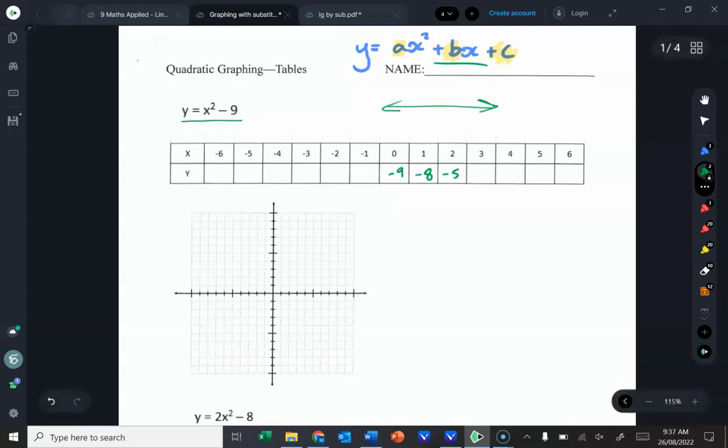So two squared is four, four minus nine is minus five, three squared is nine, nine minus nine is nothing. That's good. That's my x-intercept. And then I'm going to go four squared is 16, and 16 minus nine is seven, and then five squared is 25, 25 minus nine. I'm already off my chart, so I might not even bother filling out the rest.